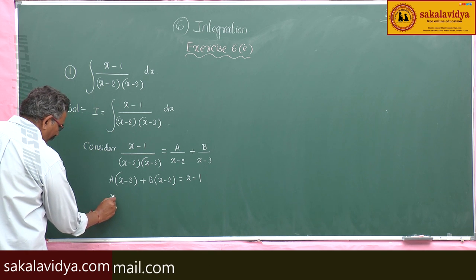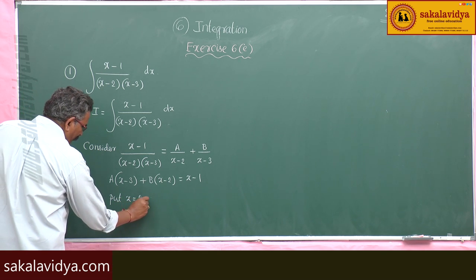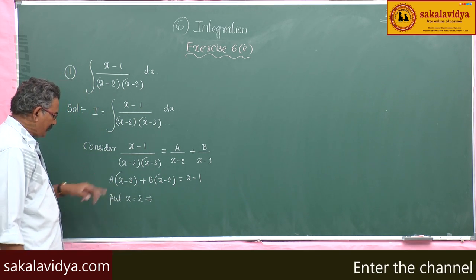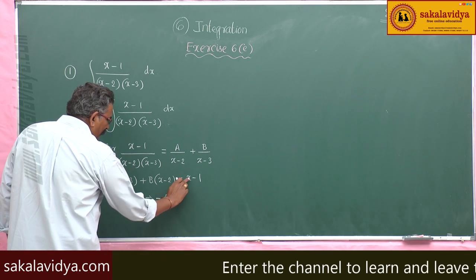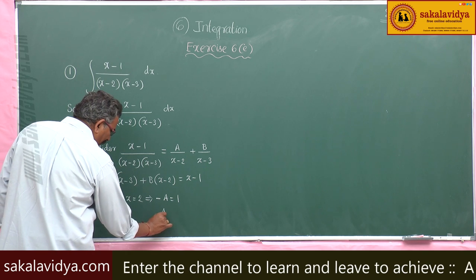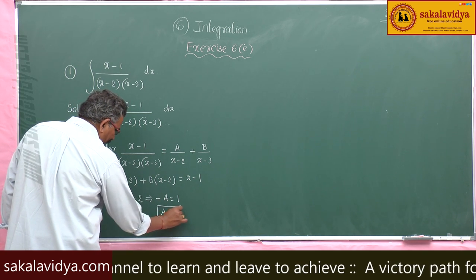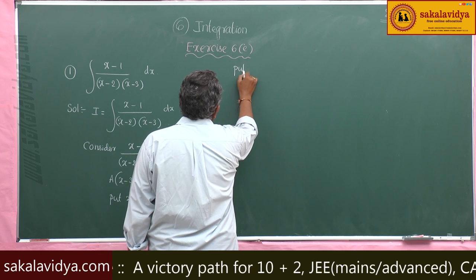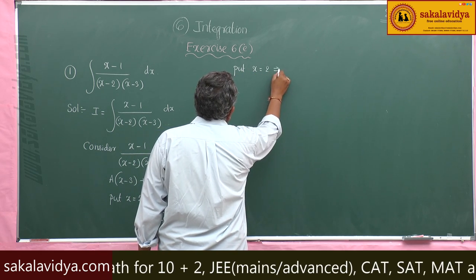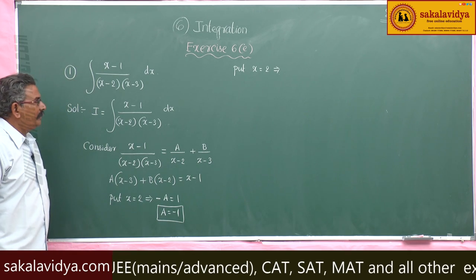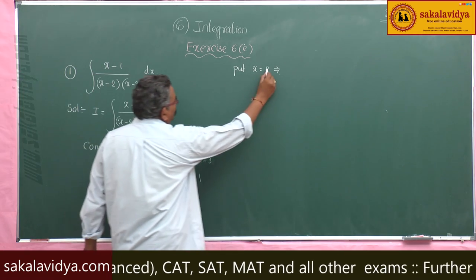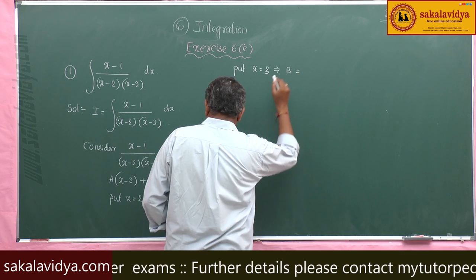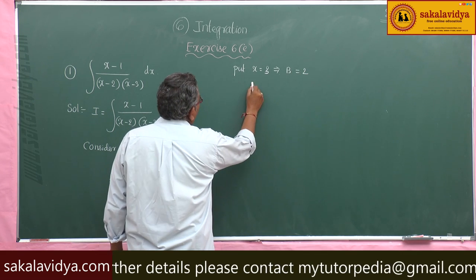Put x equal to 2: the term with x minus 2 becomes 0, leaving minus A equal to 1, so A equals minus 1. Now put x equal to 3: the term with x minus 3 becomes 0, leaving B equal to 3 minus 1, which is 2. So B is equal to 2.